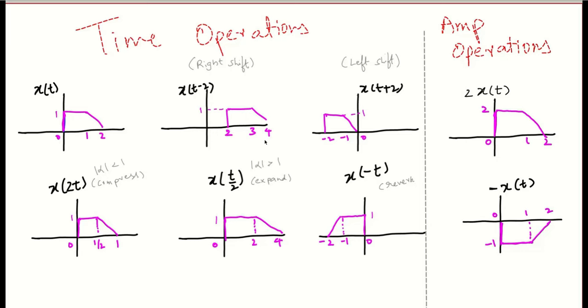Now, what is x(2t)? Comparing it with x(t/alpha), alpha is 1/2 in this case. So what you need to do is multiply every time instant by a factor alpha, that is 1/2. So 0 is multiplied by 1/2 — it is 0. And if you multiply the entire time axis, you end up getting this compressed signal. And if you consider x(t/2), alpha is 2, so every time instant is getting multiplied by 2 — this signal is being expanded.